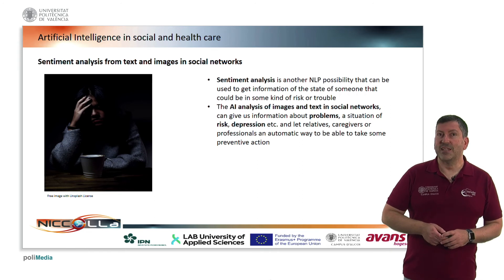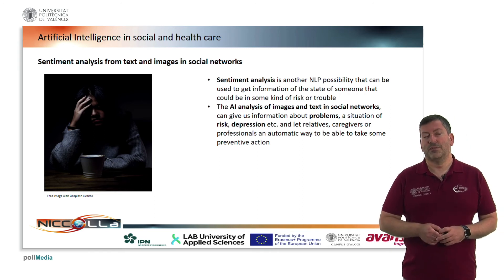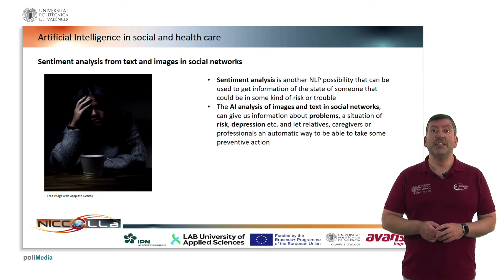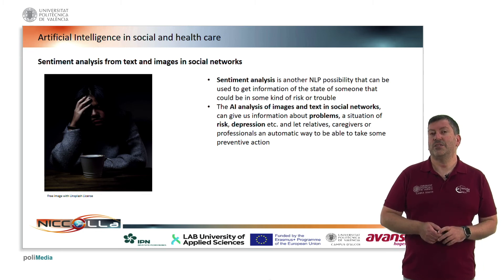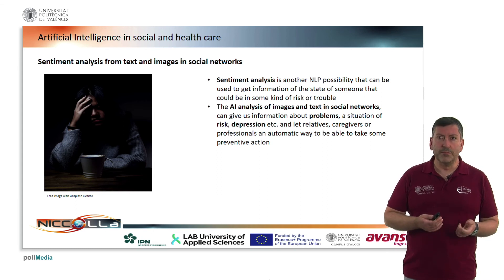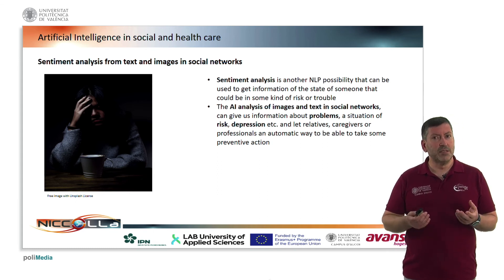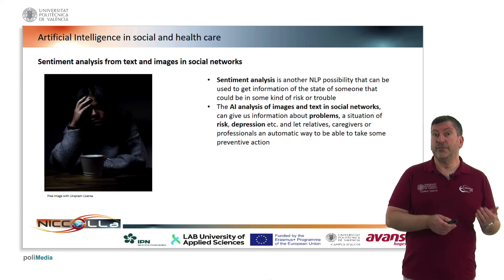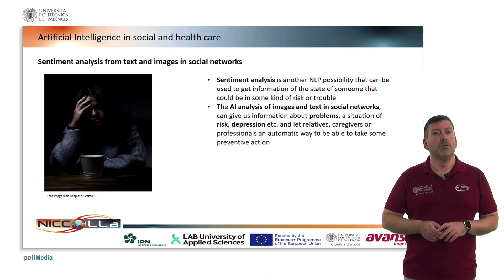Sentiment analysis from text and images in social networks is another NLP possibility that can be used to get information about the state of someone who could be in some kind of risk or trouble. The AI analysis of images and text in social networks can give us information about problems, situations of risk, and depression, and provide relatives, caregivers, or professionals an automatic way to take preventive action.